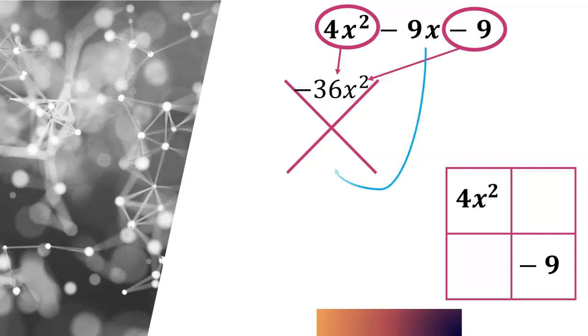Then we have that middle term, that -9x. We're going to put that in the bottom of our X. And now our goal is to figure out what two values multiply together to be -36x², the same two values that add up to be -9x. Now sometimes it's hard to think about all those possibilities. If we multiply two numbers and get a negative answer, that means one of the numbers has to be negative. And if we add them together and get a negative answer, well that means the bigger number has to be negative.